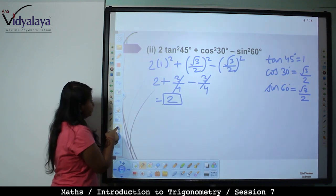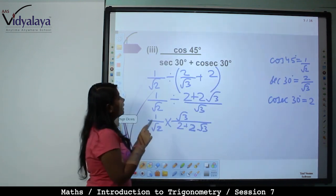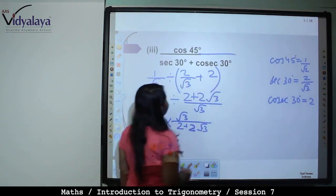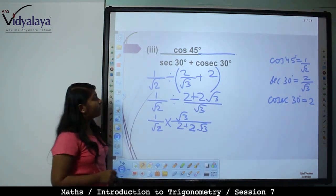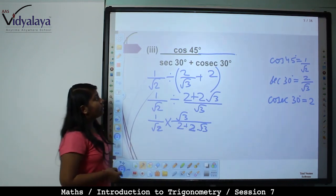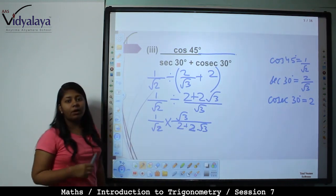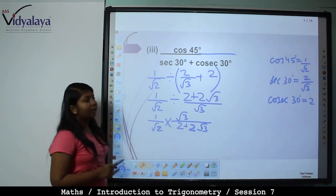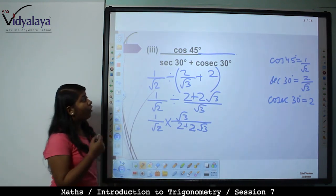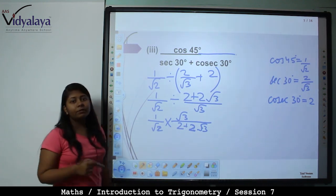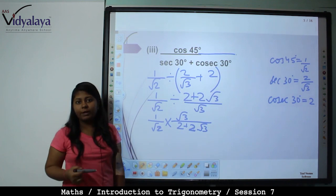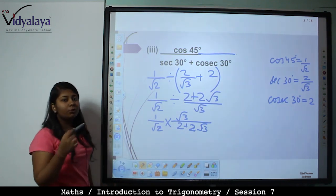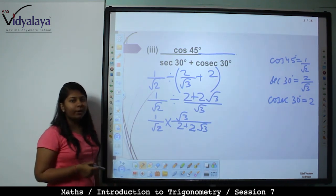Cos 45 degree upon sec 30 plus cosec 30 degrees. Cos 45 value is 1 by root 2. Sec 30 is 2 by root 3, because cos 30 value is root 3 by 2 and sec is the reciprocal of cos, so root 3 by 2 reciprocal is 2 by root 3.